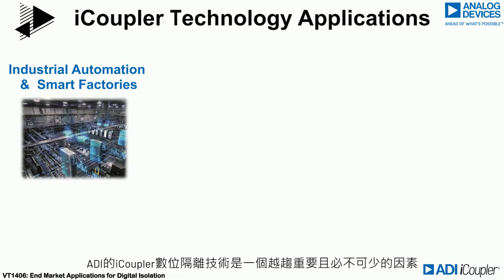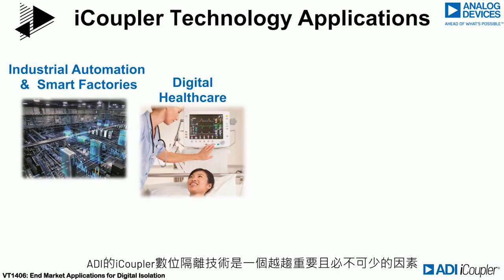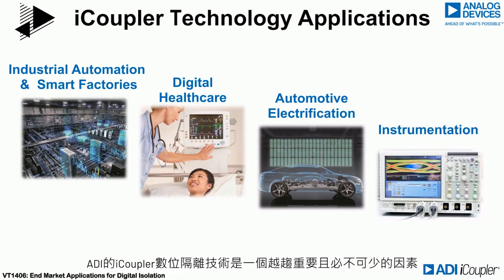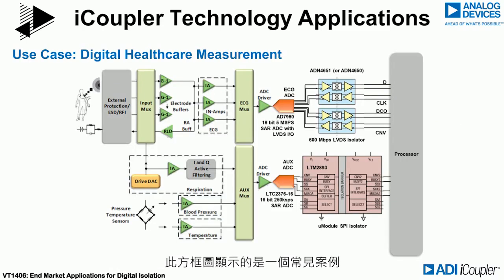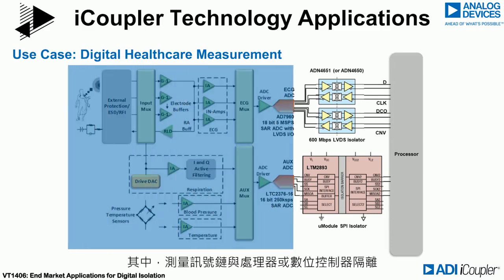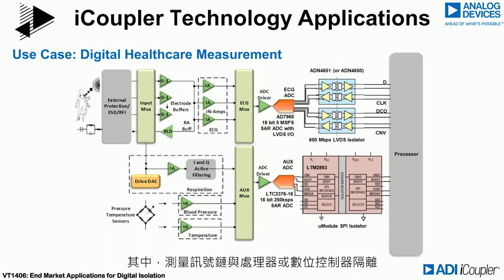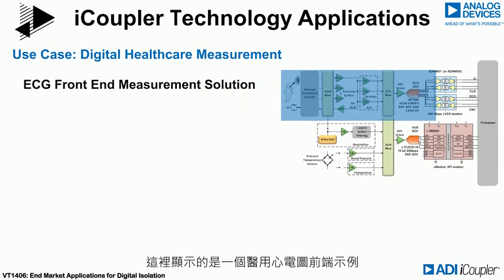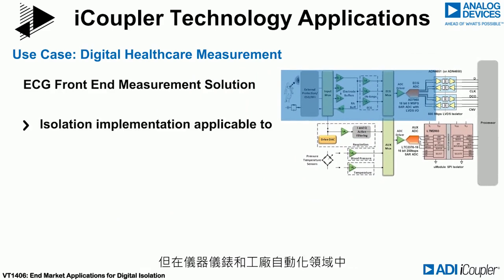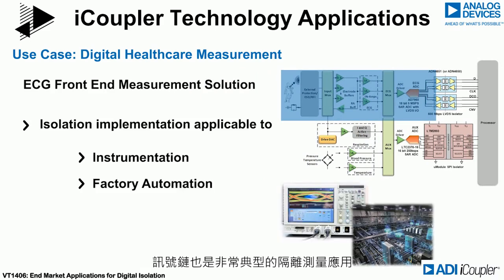These key end markets include industrial automation and smart factory, digital healthcare, automotive electrification, and instrumentation. We'll show a few examples of these applications and highlight the important isolator characteristics for each one. This block diagram highlights a common use case where a measurement signal chain is isolated from a processor or digital controller. A medical ECG front end is shown here as an example, but the signal chain is very typical of isolated measurement applications in instrumentation and factory automation as well.